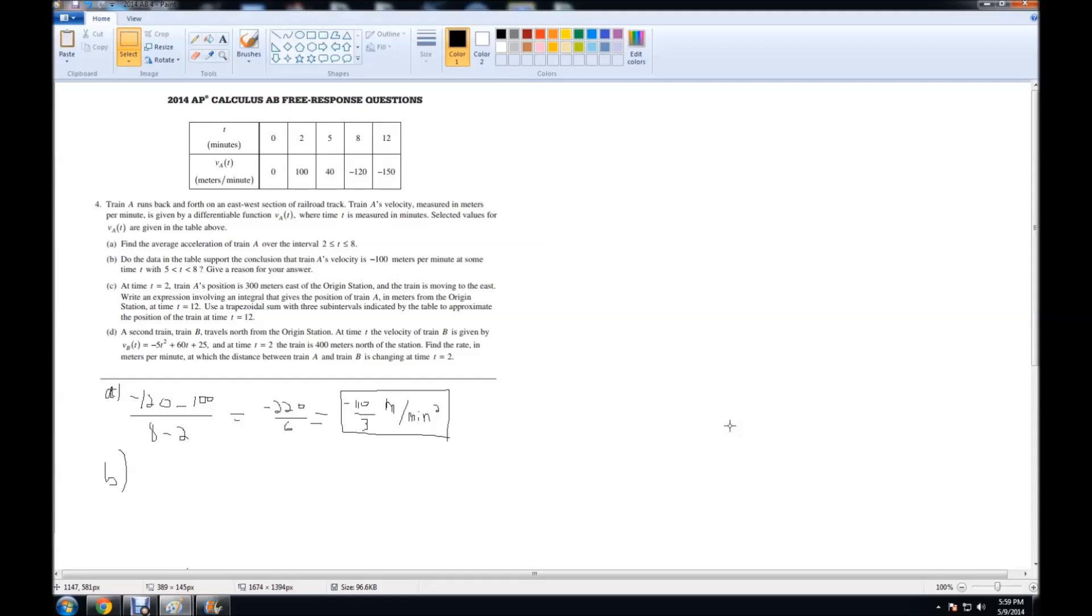Part B asks: do the data in the table support the conclusion that train A's velocity is negative 100 meters per minute at some time T within the interval 5 to 8? Give a reason for your answer. First, we have to consider whether or not this is a continuous function. Because in the description it tells us that VA of T is a differentiable function, that also means it has to be continuous, because a function cannot be differentiable if it is not continuous.